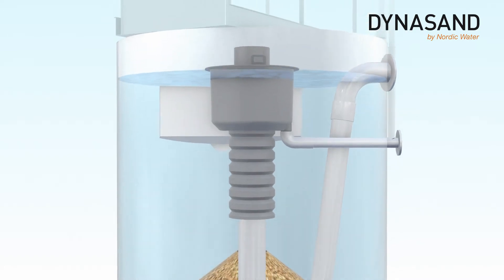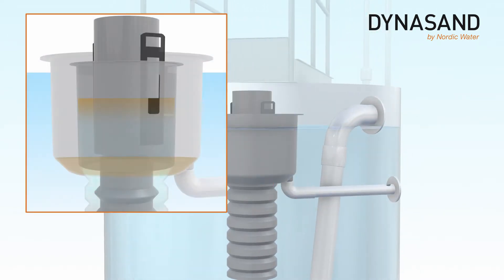The upflow of wash water through the sand washer is generated by a level difference of filtrate and wash water. The level difference is controlled by adjustable weirs, optimizing the sand washing rate and minimizing the wash water used.